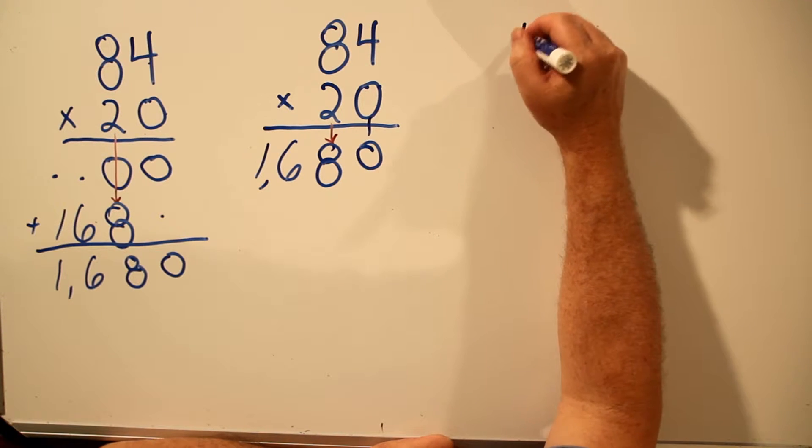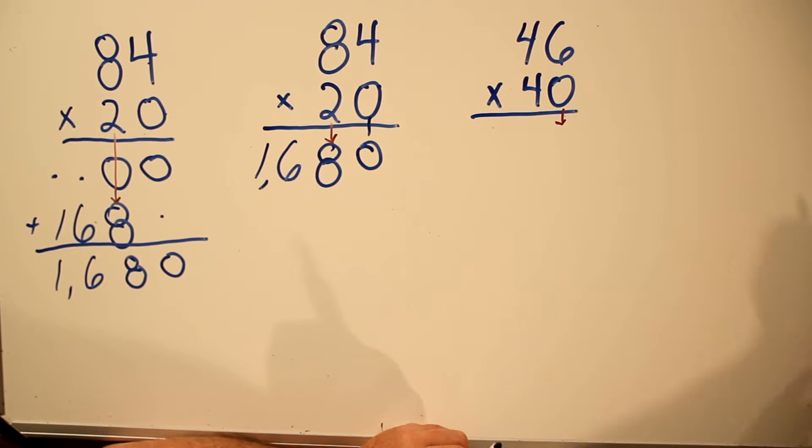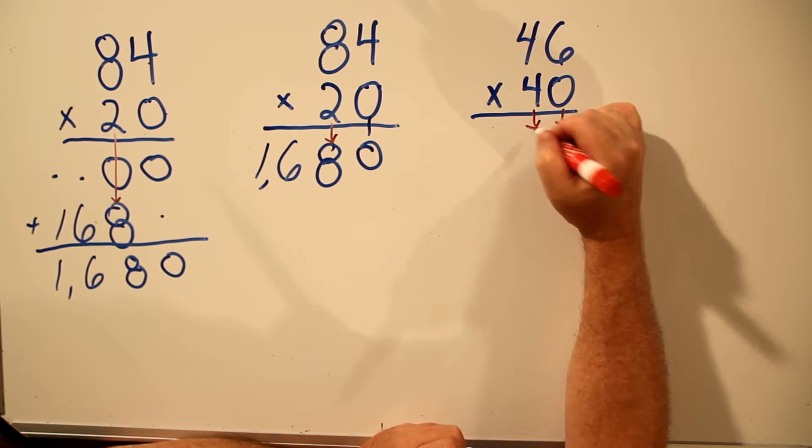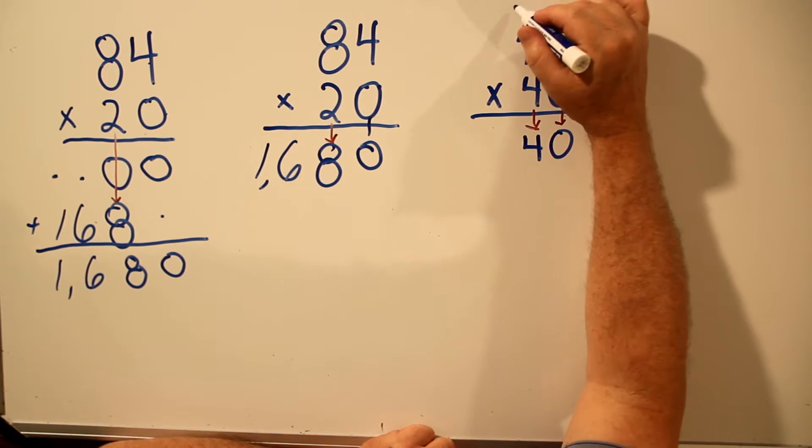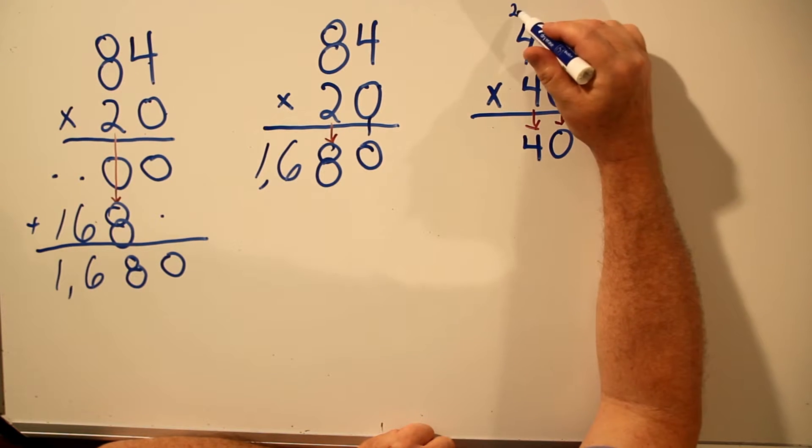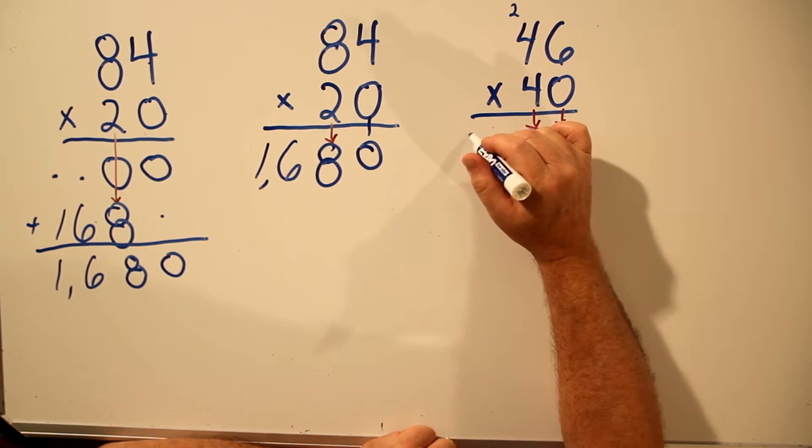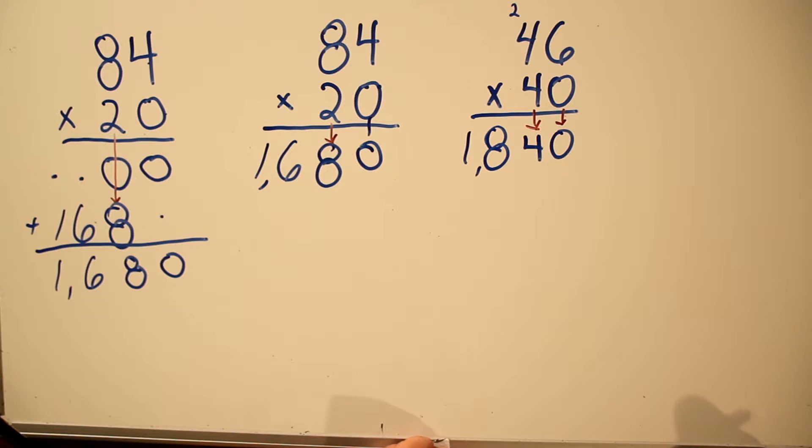Let's try 46 times 40. Bring the zero down. Then start using the 4 in the same row and write the answer underneath the 4. 4 times 6 is 24. Carry the 2. Multiply and add. 4 times 4 is 16. Plus 2 is 18. And that's the answer. 1,840.